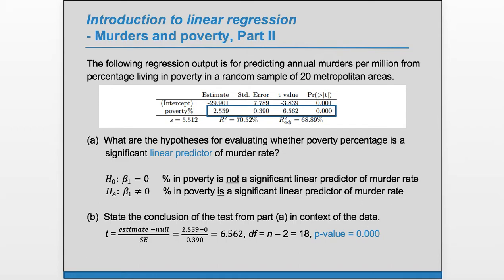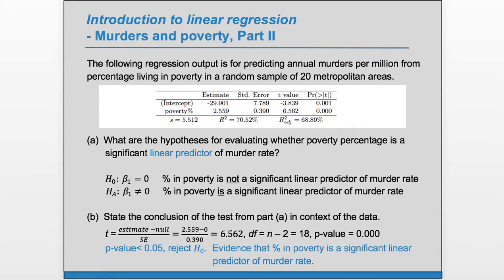Our p-value is approximately zero, so we can say our p-value is less than 0.05, so we reject the null hypothesis. If we reject H0, this means we have evidence for HA. We have evidence that percent in poverty is a significant linear predictor of murder rate.